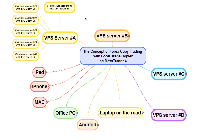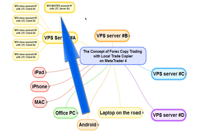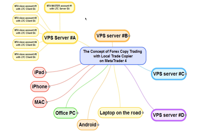Let's say you open a new position from your MetaTrader mobile app on master account number one. This position immediately becomes visible on VPS Server A where the same master account number one is running. The Server EA then takes that position and sends the trading signal to all of the MetaTrader slave accounts running on the same computer. All accounts with the Client EA running will receive that signal and open the same position — this happens in less than one second, no matter how many client accounts you have in your trade copying campaign.